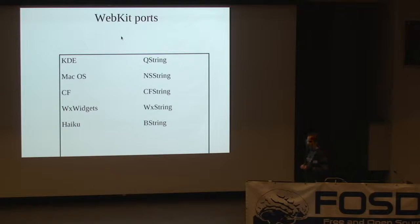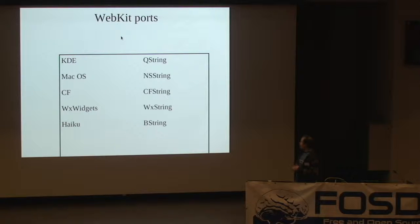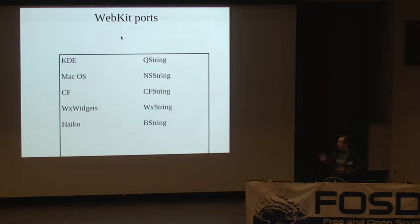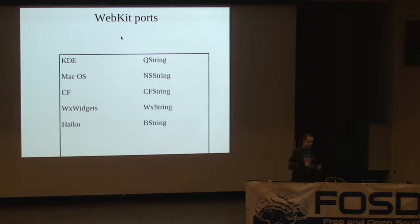There are many different string types and people can get very obsessed about which one they're using — and not just strings, also vectors and the graphical interface. The clever thing Apple did with WebKit when porting from Qt to Mac OS is that they abstracted away all of these things. They made it possible to implement a few abstract platform-dependent classes and then have a native WebKit in your environment. That's why the adoption was so great.